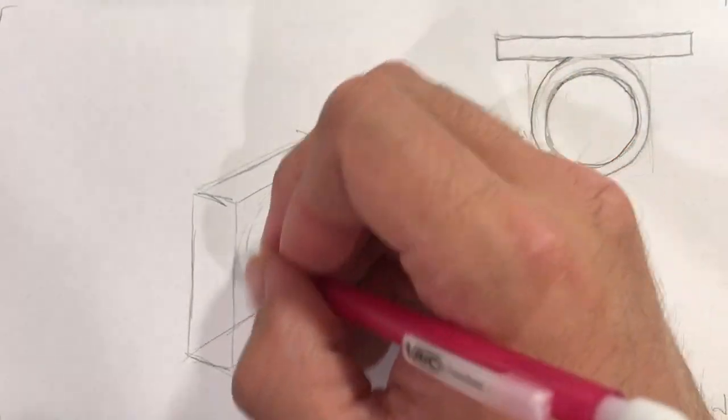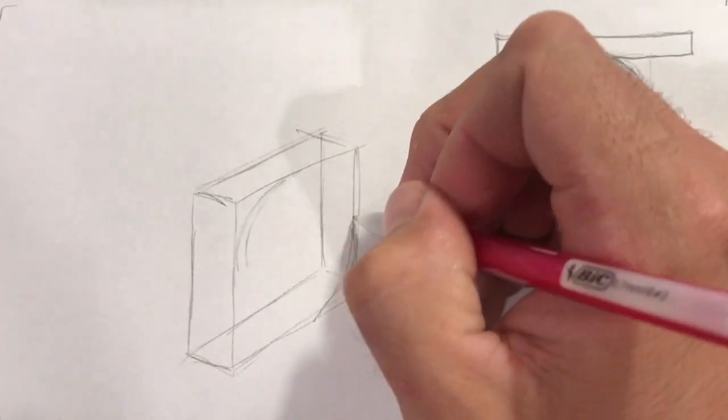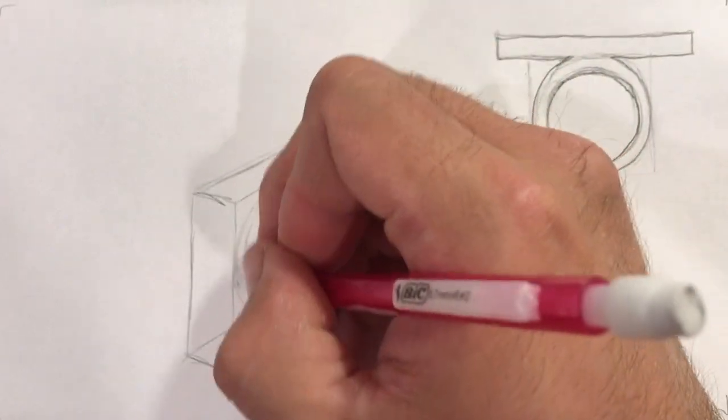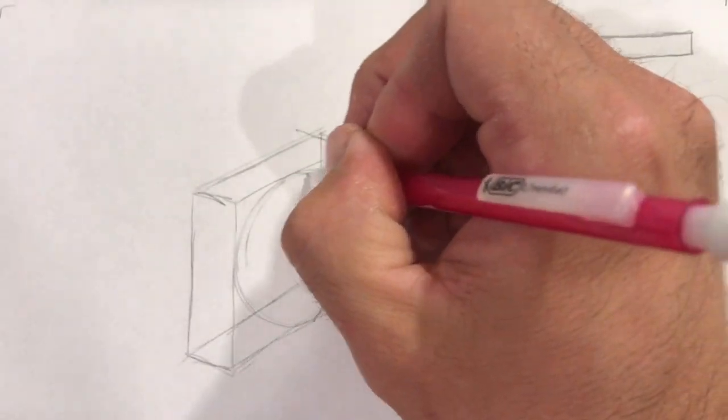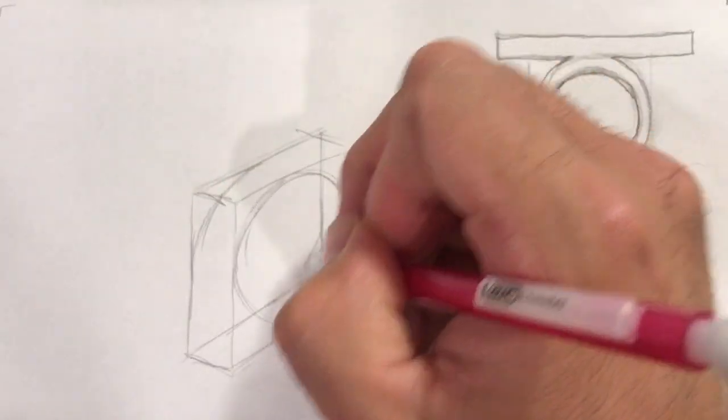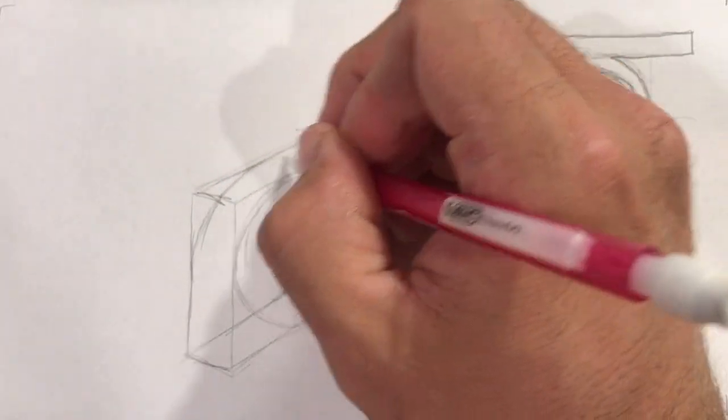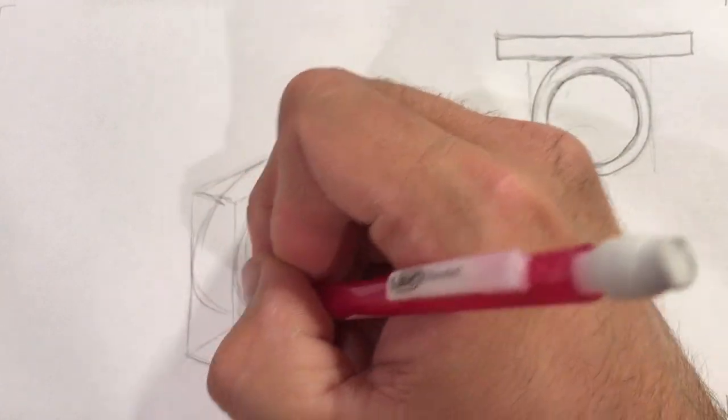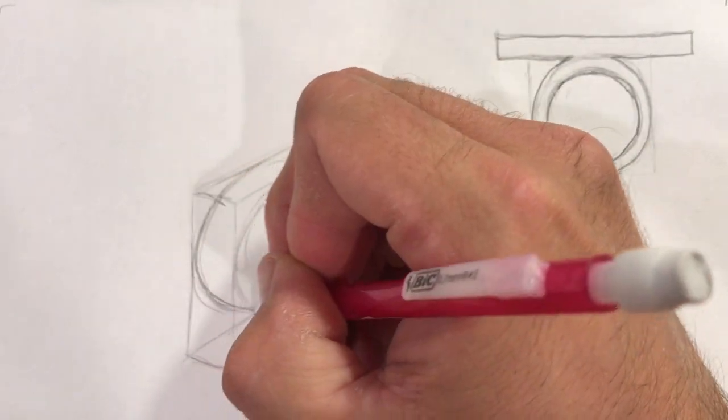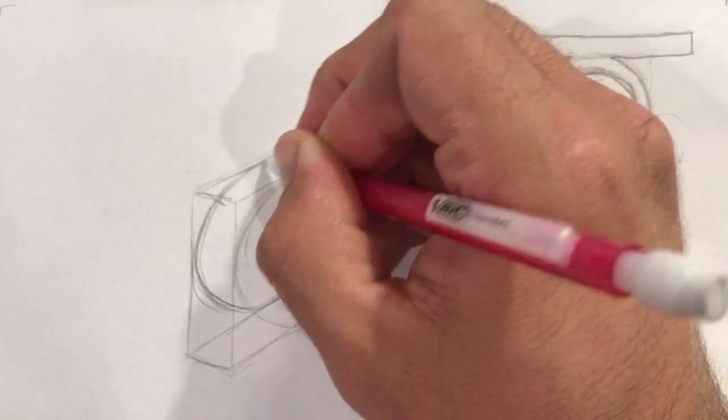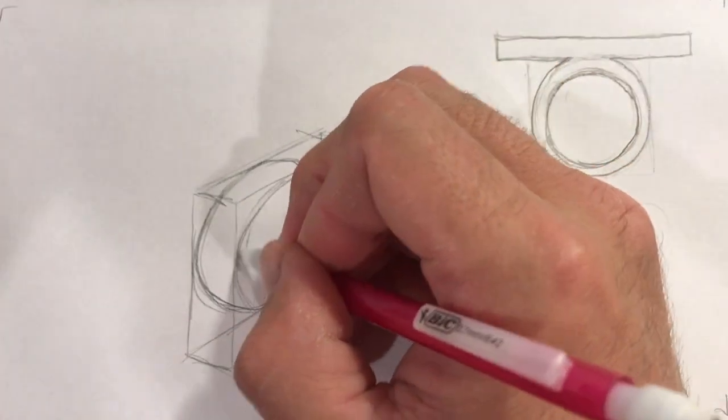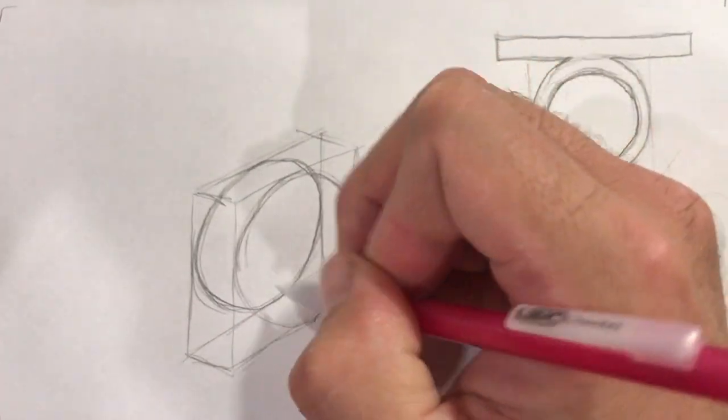Now I'm going to put in this ring right here. So there's our first ring. There's the outline for the ring.